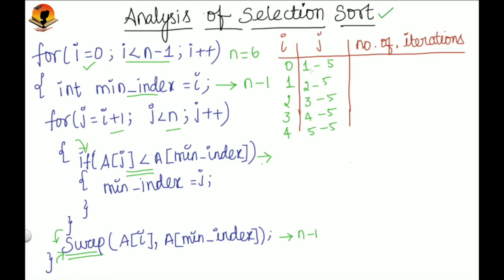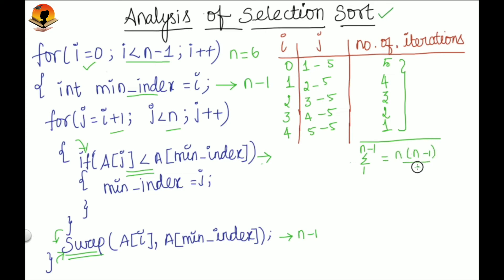From this we can conclude that on each iteration of the outer loop, the inner loop runs 5 times, then 4 times, then 3 times, then 2 times, then 1 time. This gives the number of inner loop iterations for each outer loop iteration. The total number of iterations is just the sum of these values — it is simply the sum of the first n-1 natural numbers, because the last term is 5 but n is 6. So the total is n(n-1)/2.